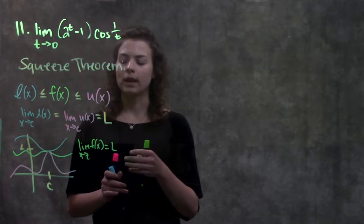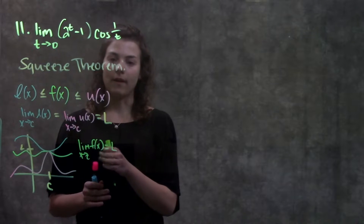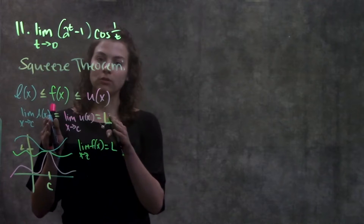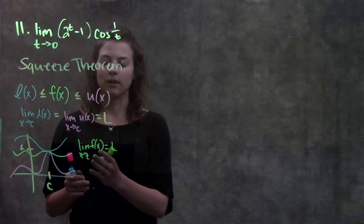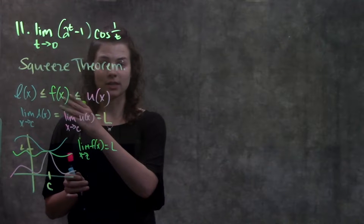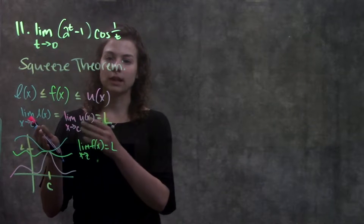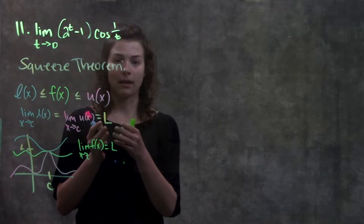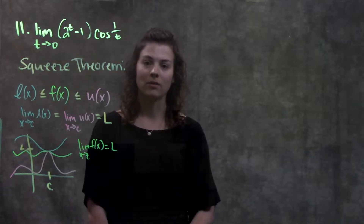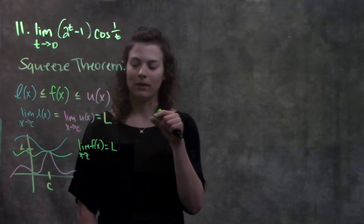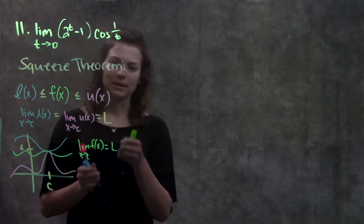This is useful if we weren't able to solve for the limit as x approaches c directly of f of x. We can put it in between two functions where we do know that limit. Since this function is always in the middle of those two functions, we're able to say by deduction that if the top and bottom functions are approaching the same value l at c, then the middle function must also be approaching that same value, since it's always squeezed at that point.